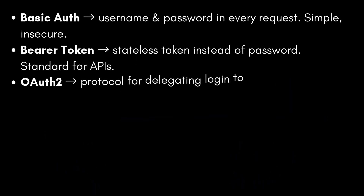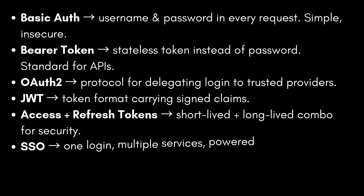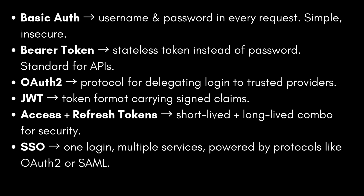Let's recap in simple terms. Basic auth is username and password in every request — simple but insecure. Bearer token is a stateless token instead of a password — standard for APIs. OAuth2 is a protocol for delegating login to trusted providers. JWT is a token format carrying signed claims. Access and refresh tokens are a short-lived and long-lived combo for security. SSO is one login, multiple services, powered by identity protocols. Remember: JWT is not authentication — it's just the format. The method is how you get the token in the first place.